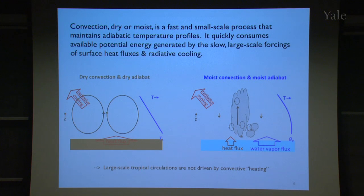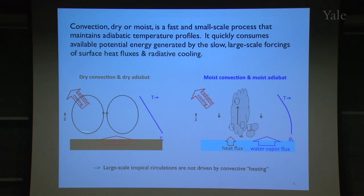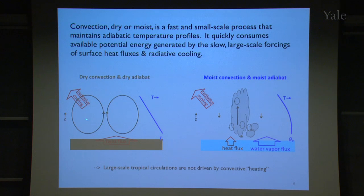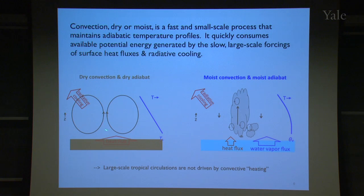When we think of the boundary layer over a desert — say the Sahara — we have dry convection with turbulent motions in the boundary layer, and the temperature profile follows a dry adiabat, falling off at about 10 Kelvin per kilometer as you go up. We don't think of this dry convection as a heat source. We think of it as maintaining this vertical temperature profile in response to heat flux from the surface and radiative cooling of the atmospheric column.